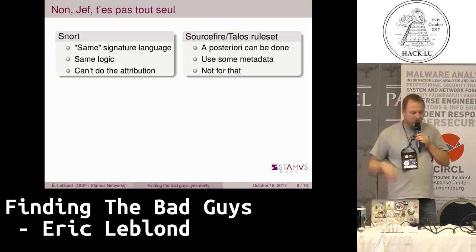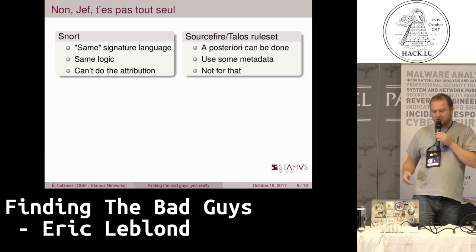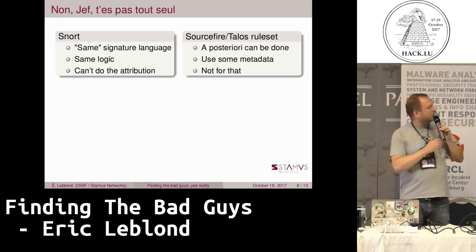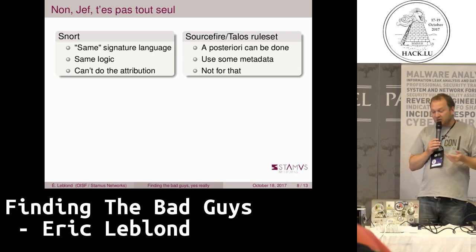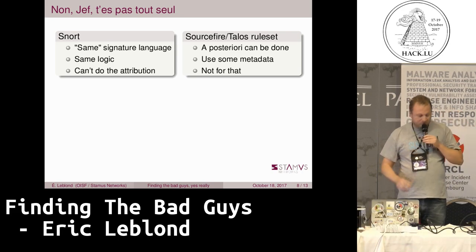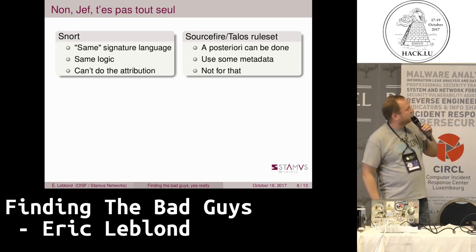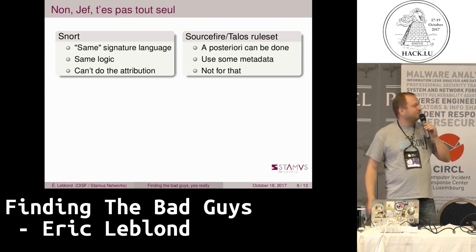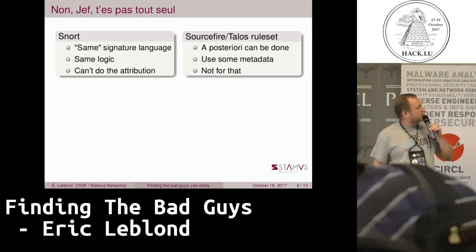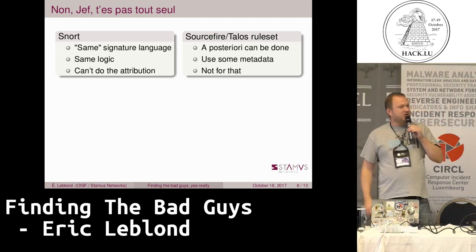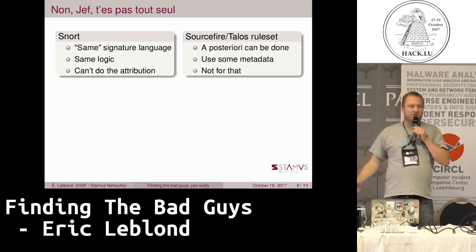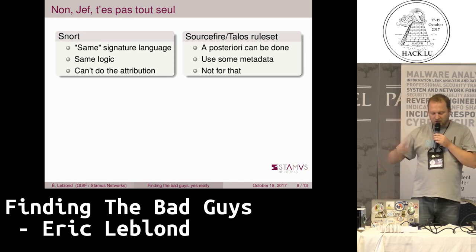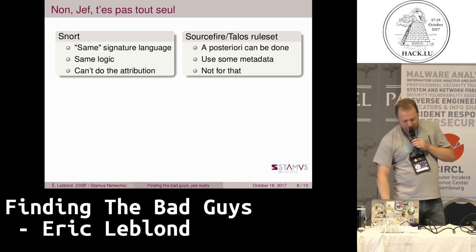I decided to look at what other solutions were doing. Snort uses quite the same rule language and has exactly the same problem, so that was a no-go — we cannot do the attribution like usual. I also checked Sourcefire to see if there is something in the rule we can use. Nothing there — there's some metadata, but nothing that tells you this is a bad guy or this is a good guy.